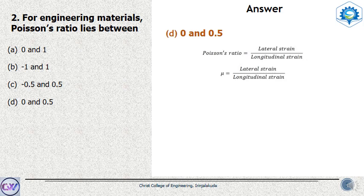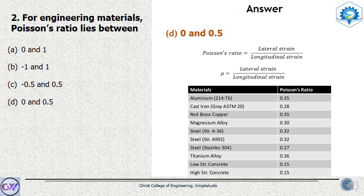The ranging value of Poisson's ratio is 0 and 0.5. Looking at the values for common engineering materials: concrete has a value of 0.15, steel has a value of 0.32, and 0.5 is the highest value. Cork is a material which has a value of approximately 0, meaning the lateral strain in that material is 0 compared to its longitudinal strain.